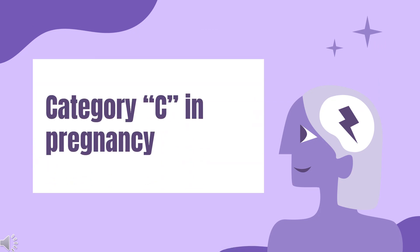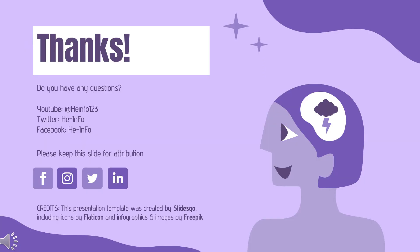Safety advice: Vigabatrin is considered a pregnancy category C medicine. Due to its potential visual side effects, therapy should start with caution after carefully evaluating the risk-benefit analysis. That's all the information about Vigabatrin. Thanks for listening — don't forget to like, share, and subscribe to the HEINFO channel for more health information.